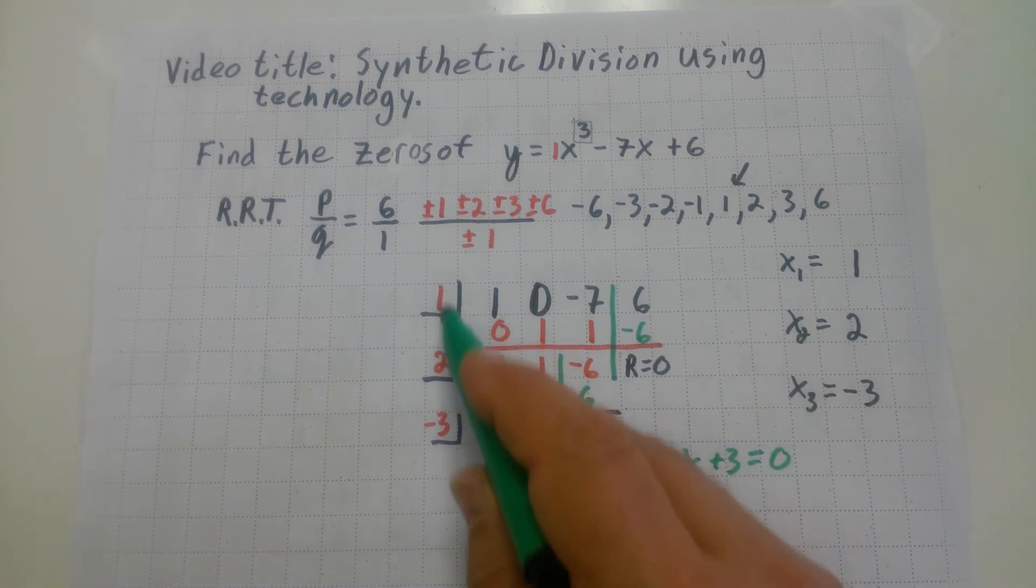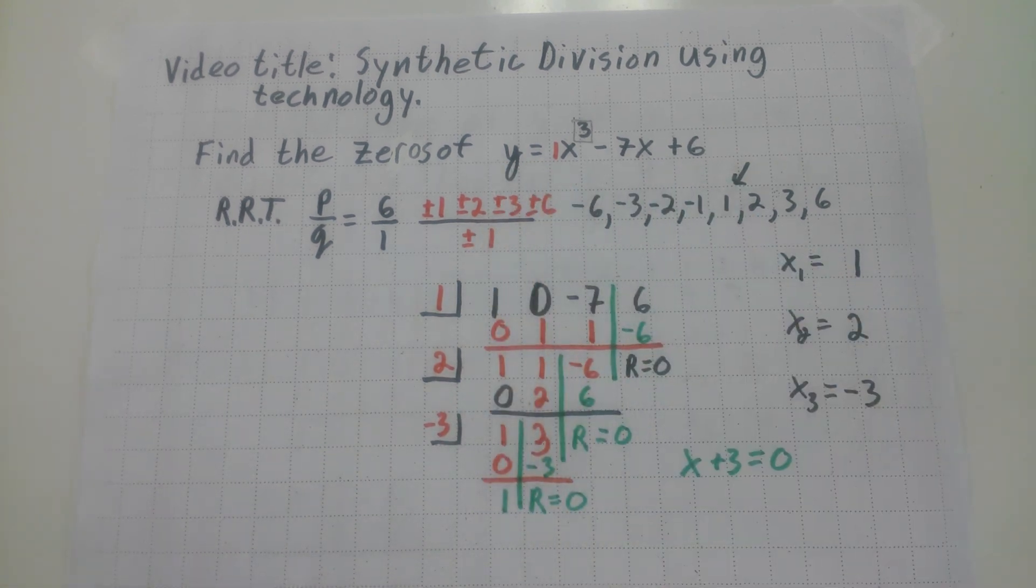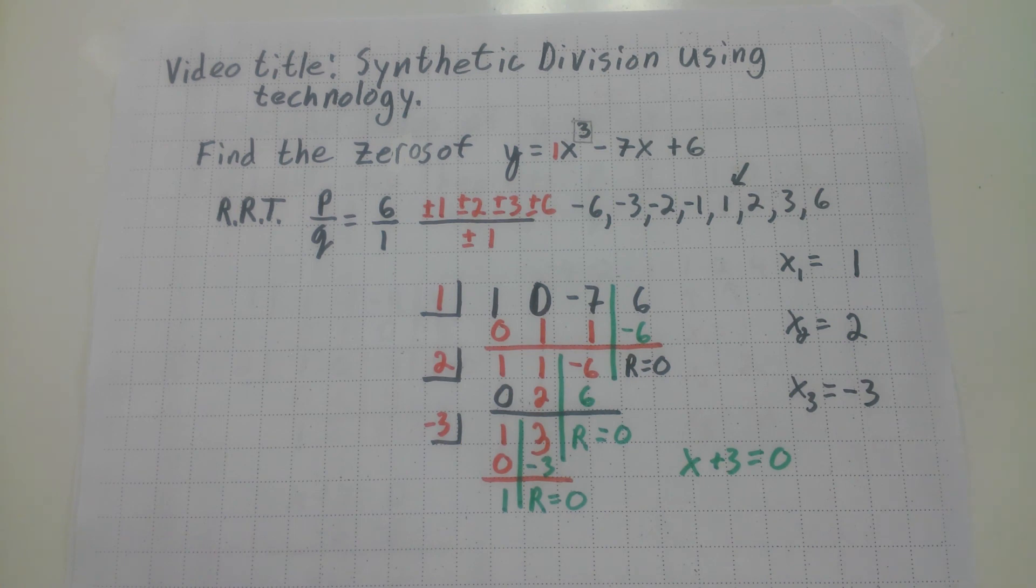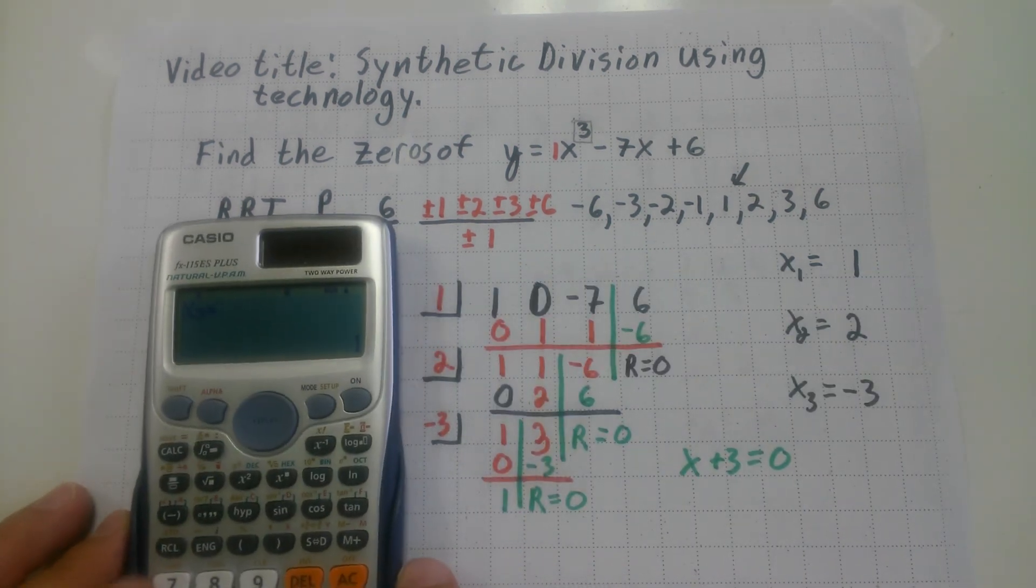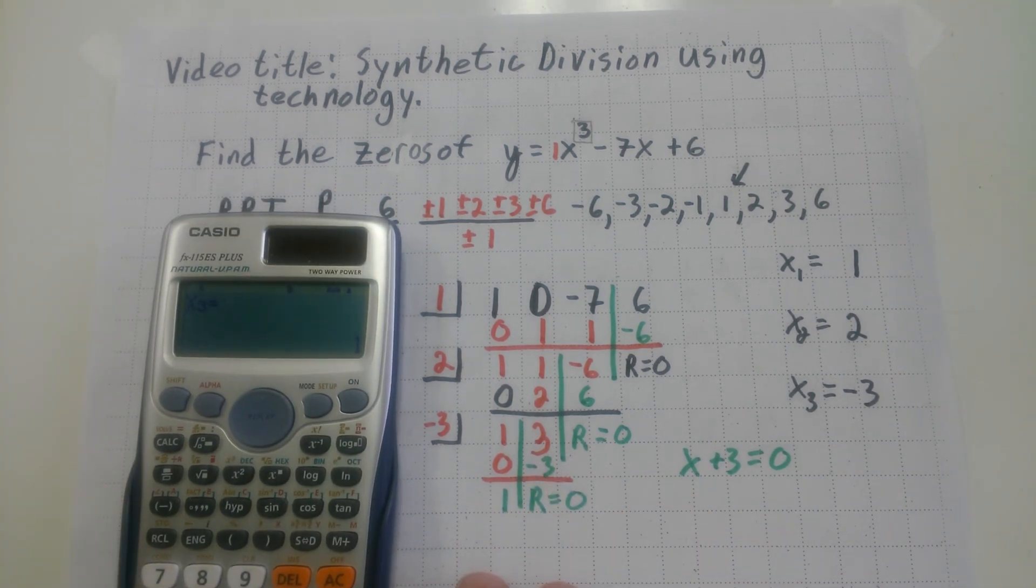And each of these are solutions to this polynomial. And that's how you find the solutions using the Casio and then show your work by using synthetic division. Thank you.